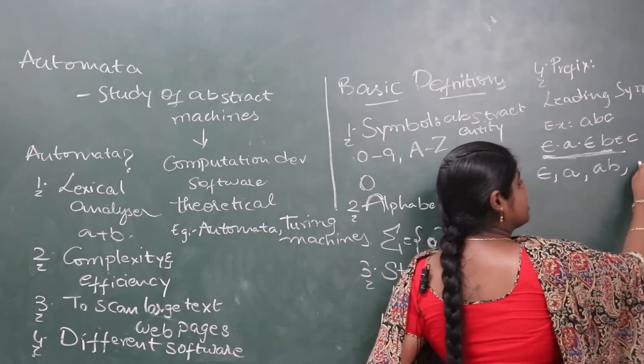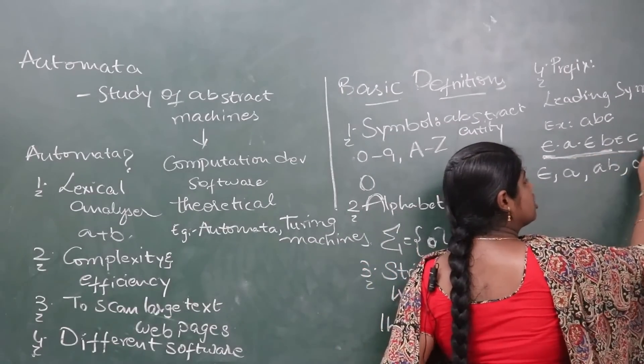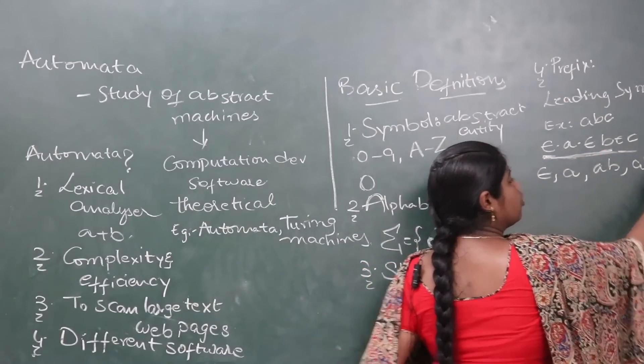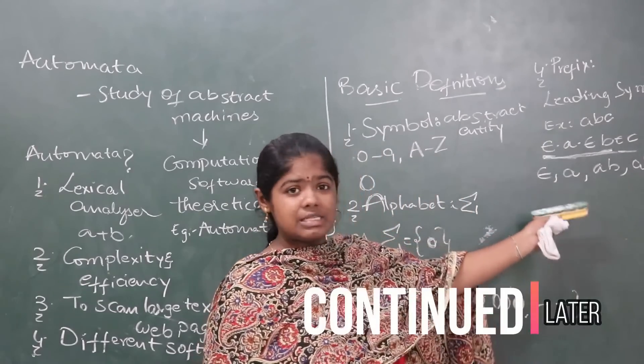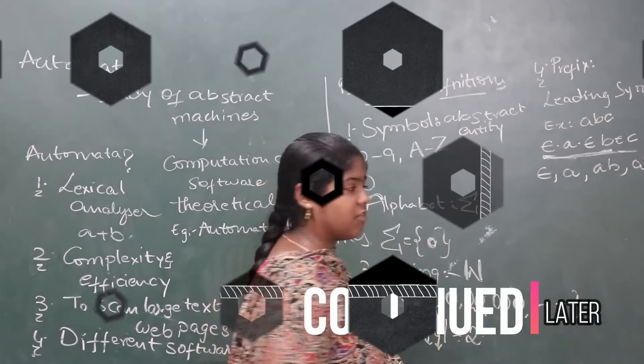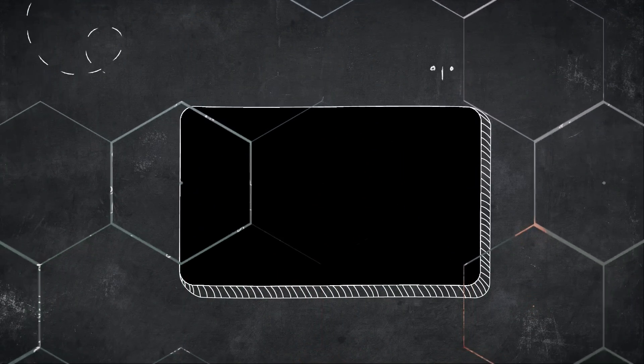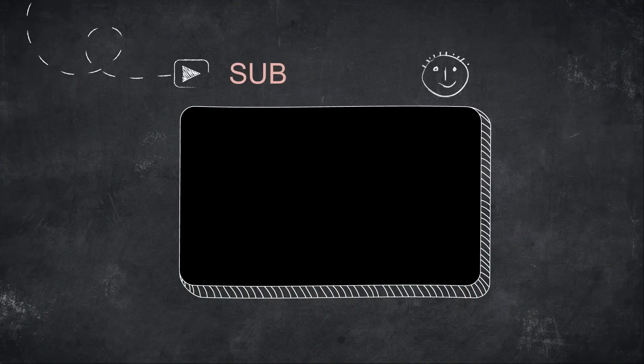The next definition is prefix. For a string like a, b, c — the number of leading symbols gives the prefix. So the prefixes of a, b, c are the leading portions of the string.